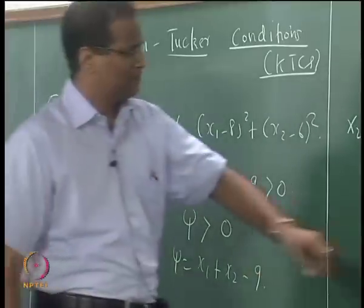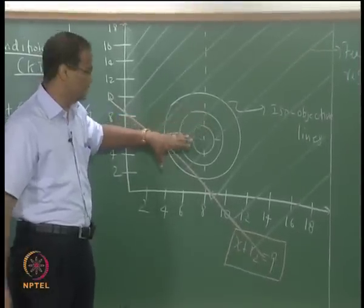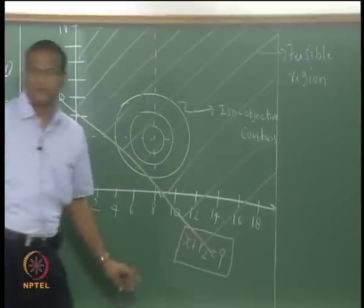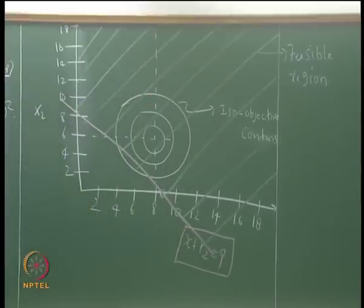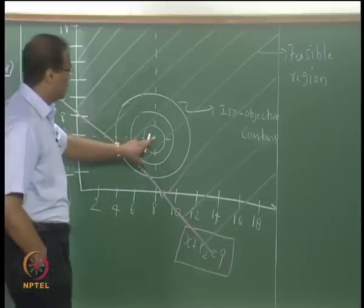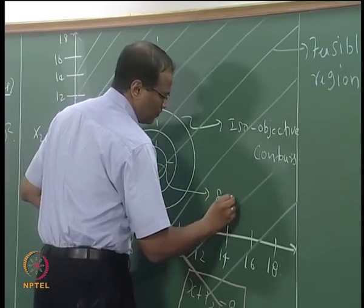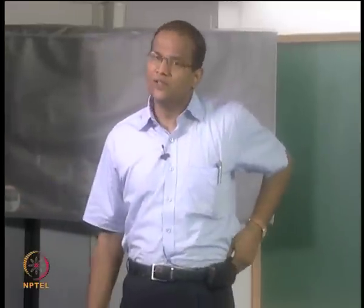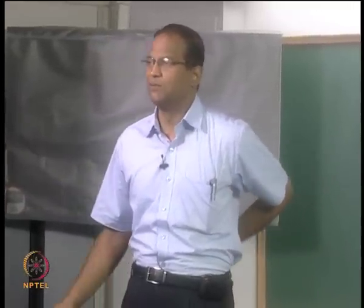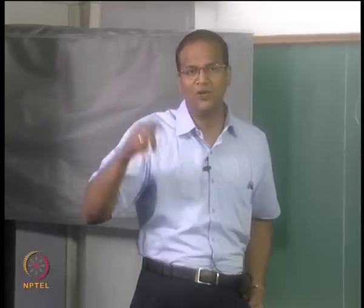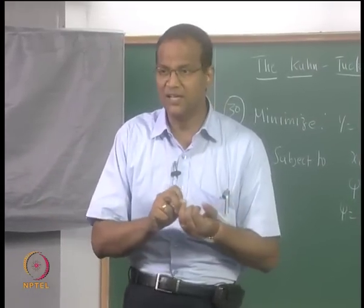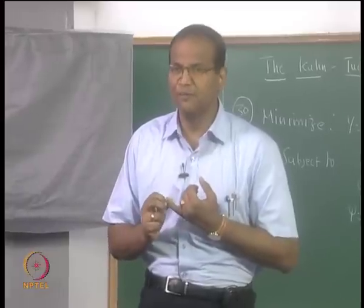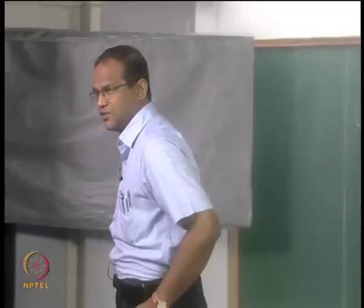I plot the iso-objective contours on the x₁-x₂ plane, which leads to different values of y. The center point corresponding to (8, 6) corresponds to y = 0, that is the solution in the absence of any constraint. Now we introduce the constraint x₁ + x₂ - 9 > 0. When we applied the rigorous Kuhn-Tucker condition procedure, we found u is negative. Since a negative value of u is unsustainable, this constraint is not binding and can be omitted.